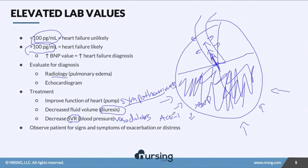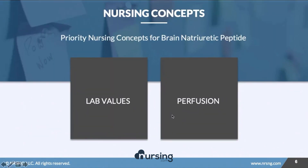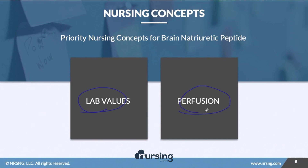Of course, we want to watch our patient for signs and symptoms of heart failure to make sure they're consistent with these lab results. Is the patient having a hard time breathing? What does their fluid volume look like? Do they have edema? The key nursing concepts here are lab values and perfusion — is the patient getting adequate blood perfusion for the body to be healthy?